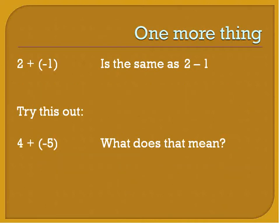One more thing with negative numbers. When you have 2 plus negative 1, that's the same as saying 2 minus 1. It means exactly the same thing. If we're joining 2 and negative 1 together, we get 2 minus 1. So how would we write 4 plus negative 5? We would write 4 minus 5. And that's what we would do. It's really that simple.